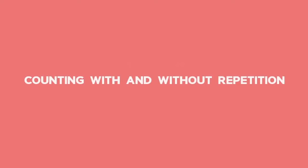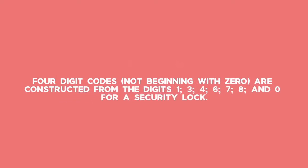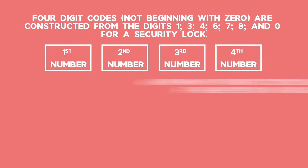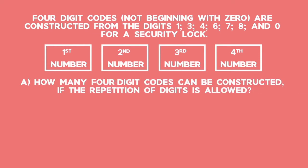Example 1: Counting with and without repetition. Four-digit codes not beginning with zero are constructed from the digits 1, 3, 4, 6, 7, 8 and 0 for a security lock. A: How many four-digit codes can be constructed if the repetition of the digits is not allowed?